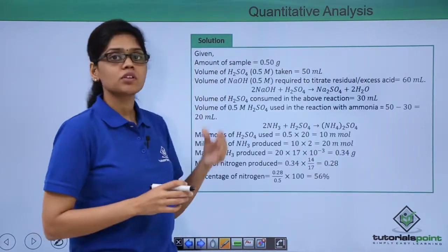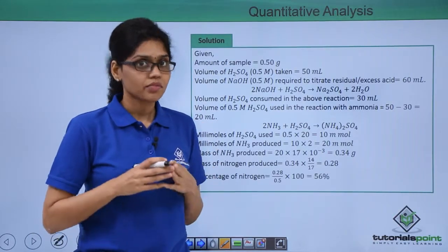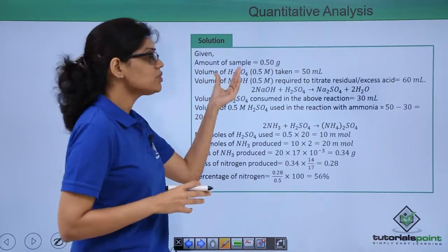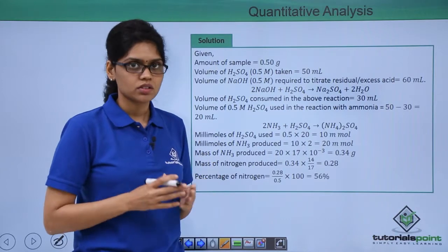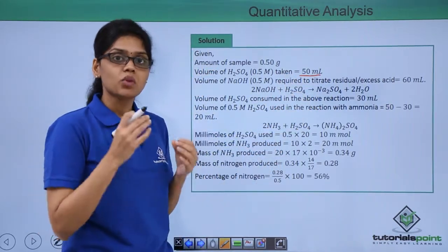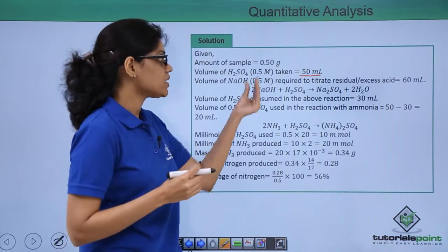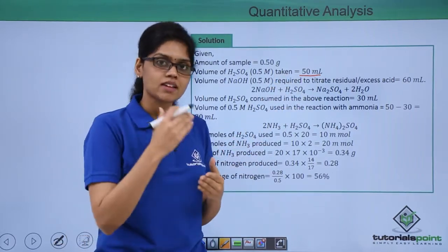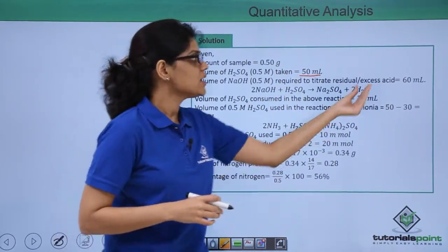It's given that the amount of sample taken is 0.5 gram and volume of sulfuric acid taken in total is 50 ml. It's also given that the volume of sodium hydroxide that was required to titrate excess or unused acid was 60 ml.